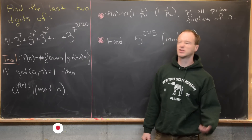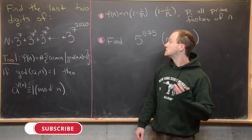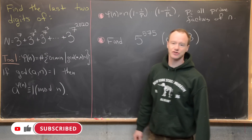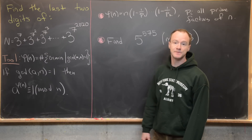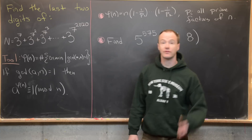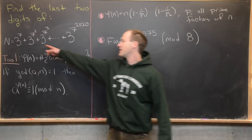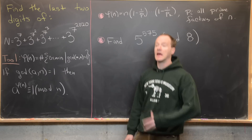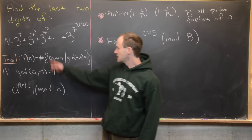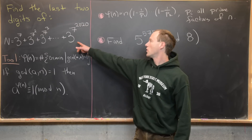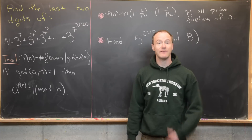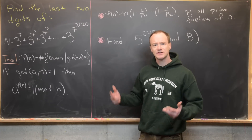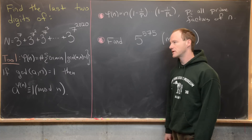Here we're going to look at a classic number theory trick type problem. Our goal is to find the last two digits of this astronomically large number: 3 to the 7, plus 3 to the 7 squared — meaning 3 to the 49, not 3 to the 7 then squared — and then plus 3 to the 7 cubed, all the way up to 3 to the 7 to the 2020. We're going to use, as a tool, Euler's generalization of Fermat's Little Theorem.